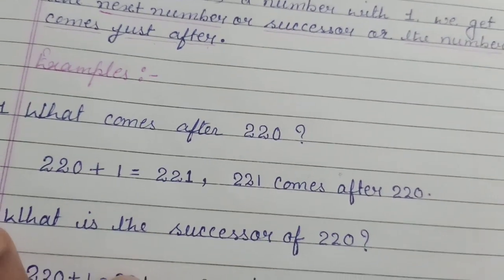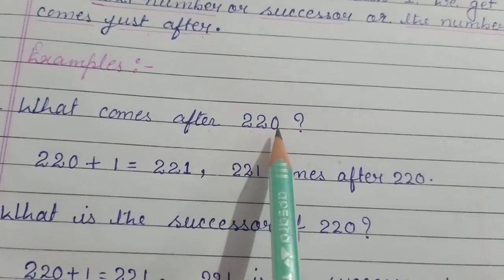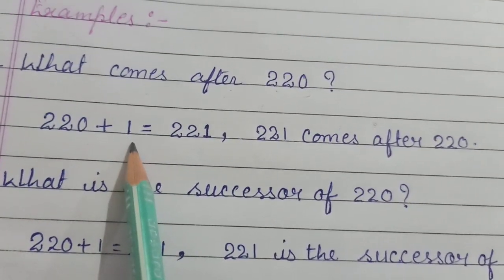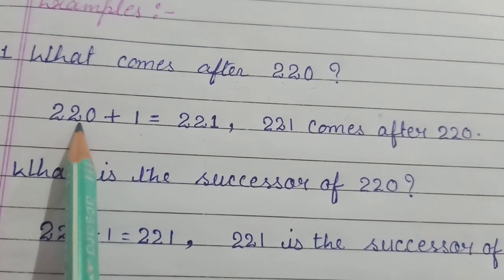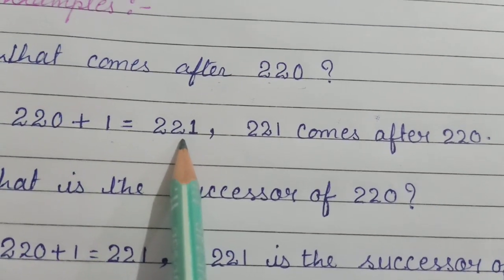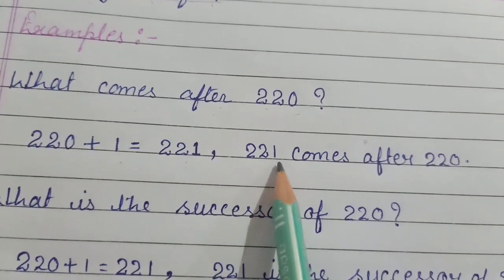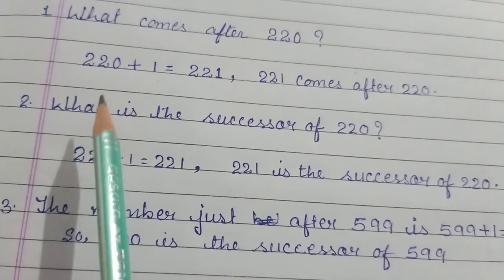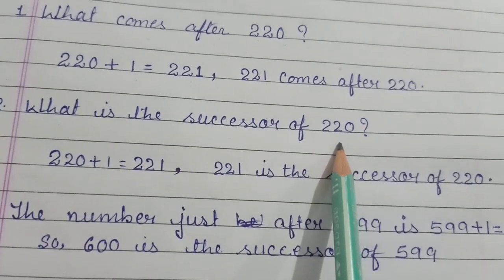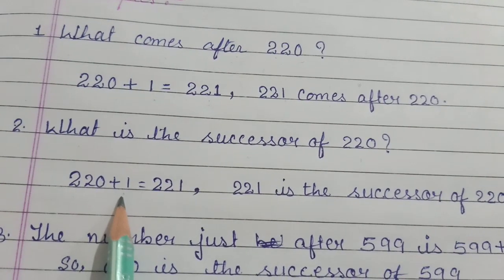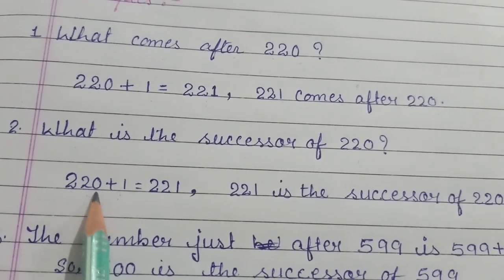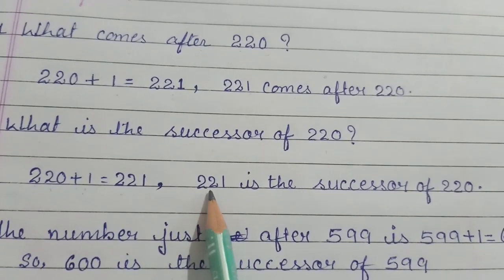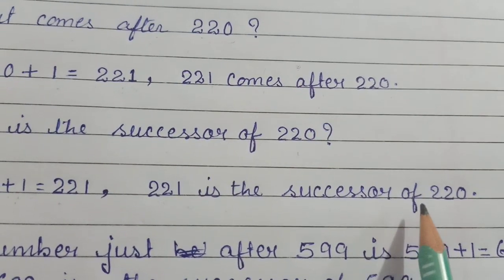Now see this example. What comes after 220? We will add 1 to get the answer. 220 plus 1 is equal to 221. So 221 comes after 220. And if the question is: what is the successor of 220? Then again we will add 1 in 220. 220 plus 1 is equal to 221. So here also we got the same answer. 221 is the successor of 220.